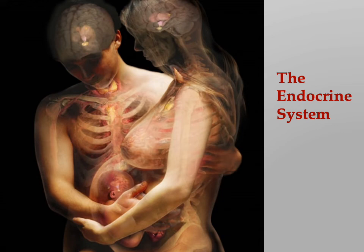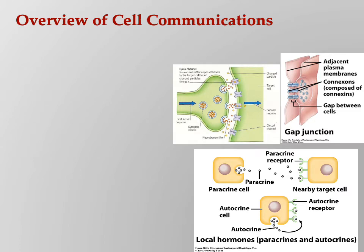Let's talk about the endocrine system. So let's remember about cells talking to each other. There are a few different ways this can happen. Cells of your body have to talk to each other in order to let each other know what's going on. You wouldn't make it otherwise.